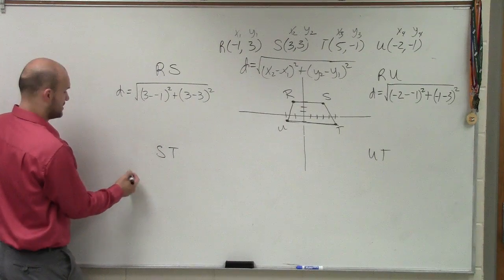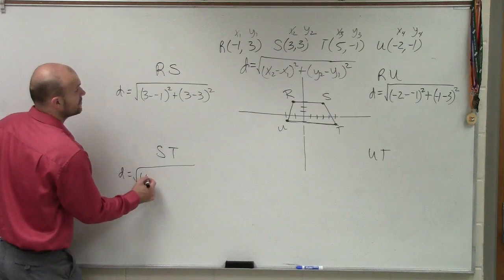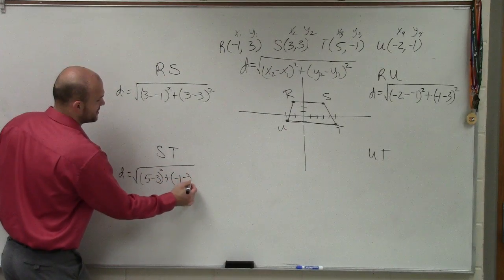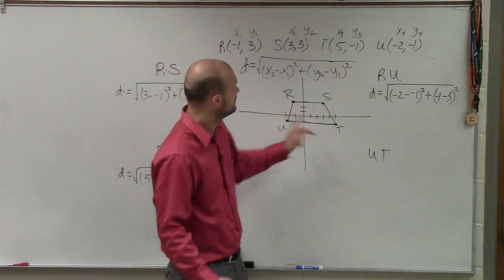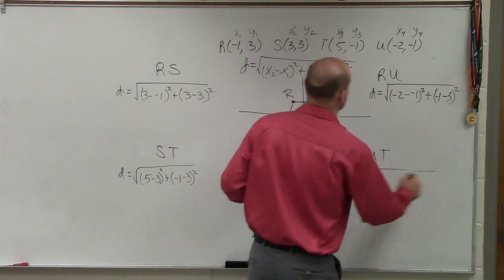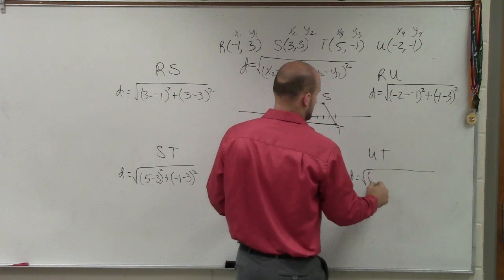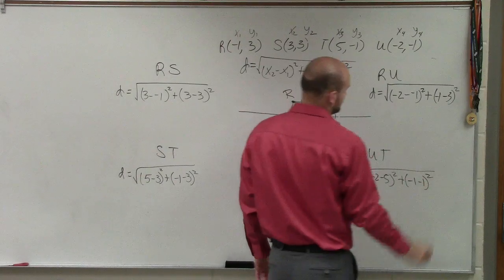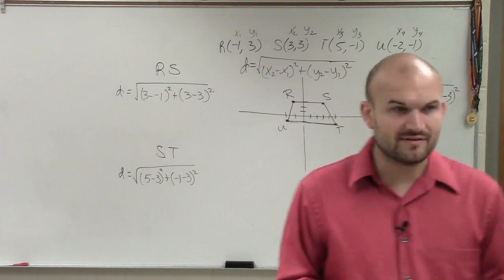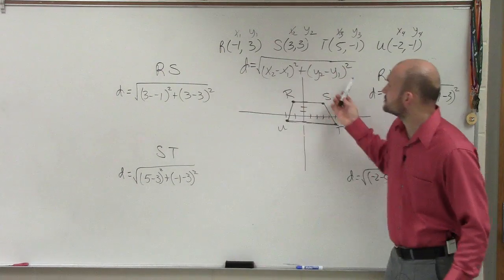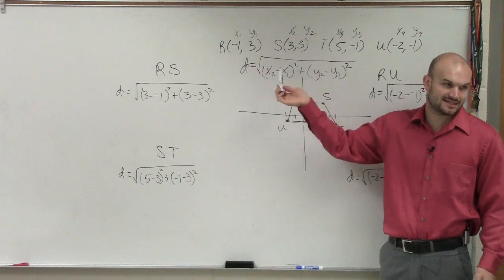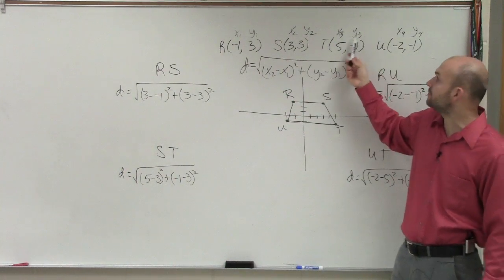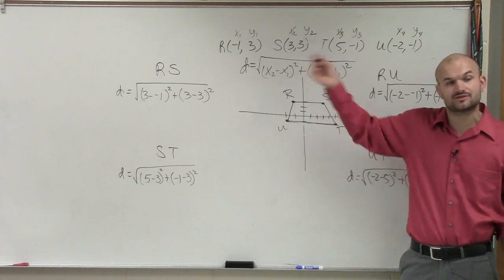So we have S and then T. So distance equals the square root of 5 minus 3 squared plus negative 1 minus 3 squared. And then UT, distance equals the square root of negative 2 minus 5 squared plus negative 1 minus 1 squared. What's important is I always did it in the same order. So I always subtracted one point from another point. It didn't matter if it was the x's or the y's. You always do it in the same order.